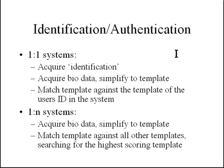In one-to-many systems, there's no form of identification presented — the system performs both identification and authentication. The user just presents themselves, bio data is acquired and simplified to a template, and the system matches it against all stored templates. The highest scoring template exceeding a certain threshold identifies the authenticated person. If more than one score exceeds the threshold, there are potential false match problems.